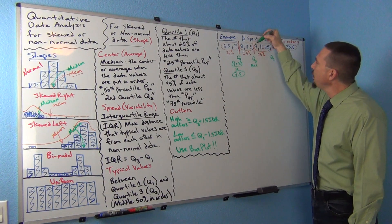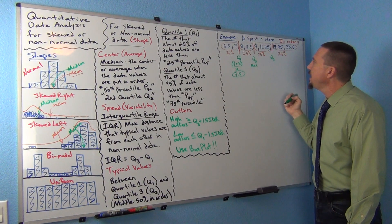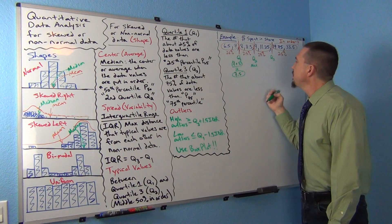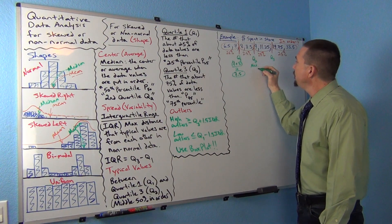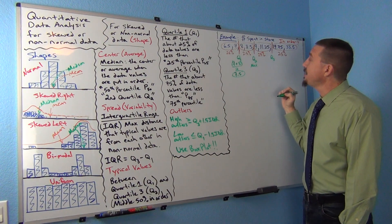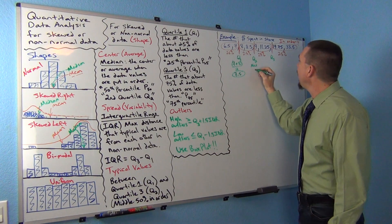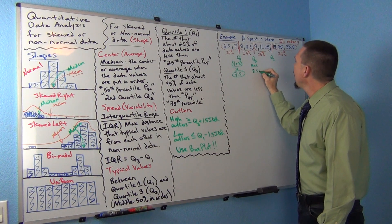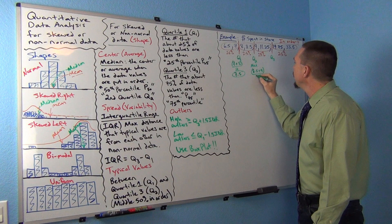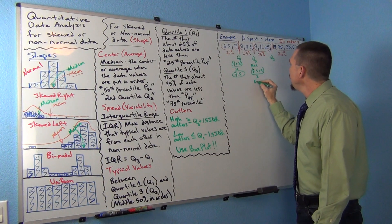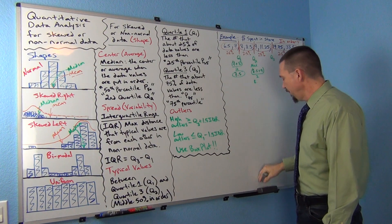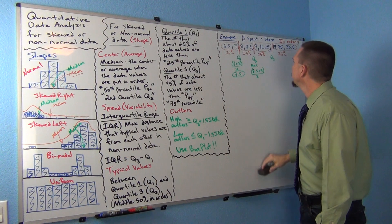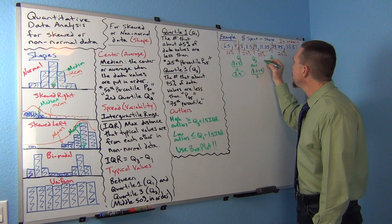Same thing here. Halfway between 8.5 and 9 is 8.75. But if you couldn't think of that, you could do 8.5 plus 9 on a calculator and divide by two. You would get 8.75.